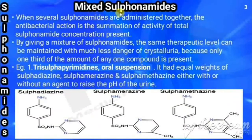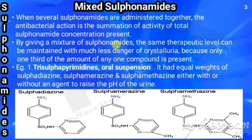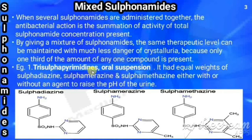Now we will see what are mixed sulfonamides. When several sulfonamides are administered together, their antibacterial action is the summation of the total sulfonamide concentration present. So if you give a mixture of sulfonamides, the same therapeutic level can be maintained with less chance of crystalluria, because only one-third of any one compound is present. An example is trisulfa pyrimidines, available in oral suspension and tablets.